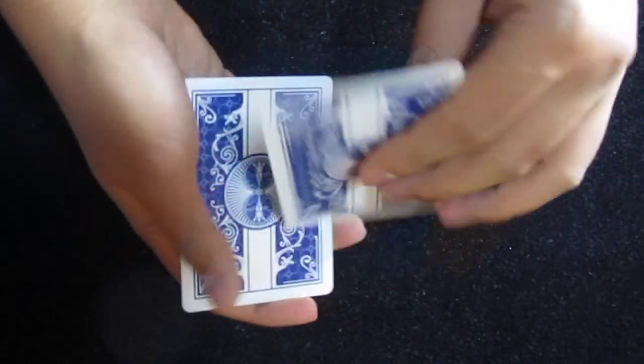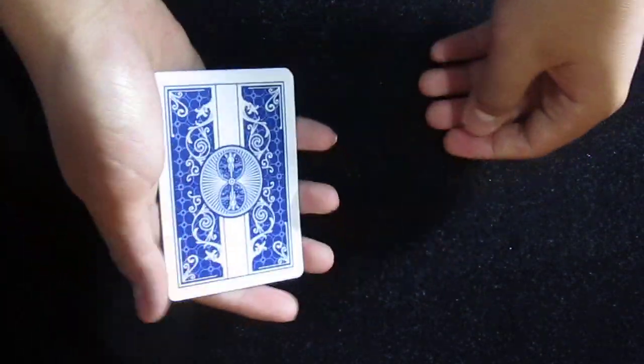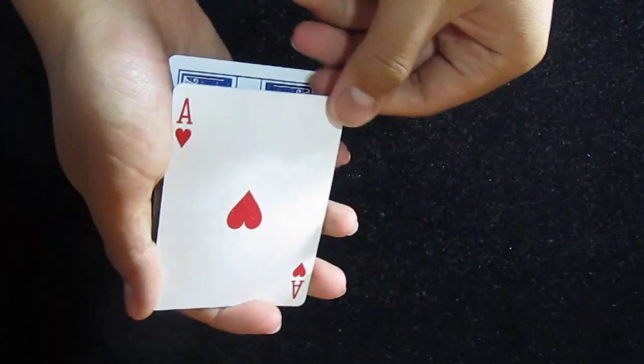Now, the ace is on the bottom and two is on top. Now I'll reverse the order, and of course, on top should be the ace of hearts.